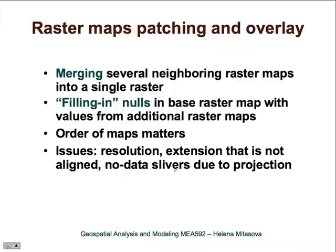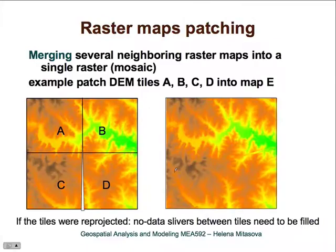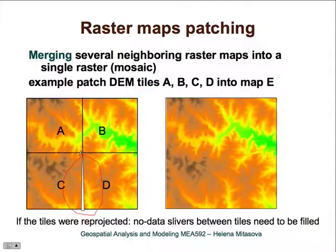When patching maps, we need to be aware of the resolution and whether the tiles were projected. For example, when tiles were first reprojected and then merged, you can get slivers that need to be filled. When filling them, you need to be aware of whether you are working with continuous data — in which case you would use interpolation — or qualitative data, for which nearest neighbor would be the best method to fill the gap.